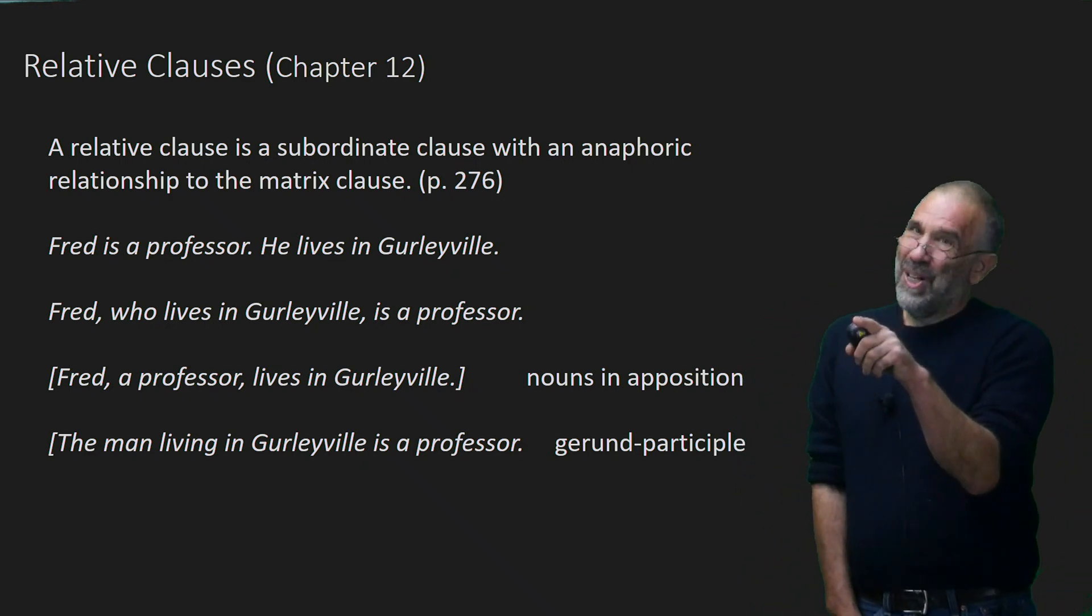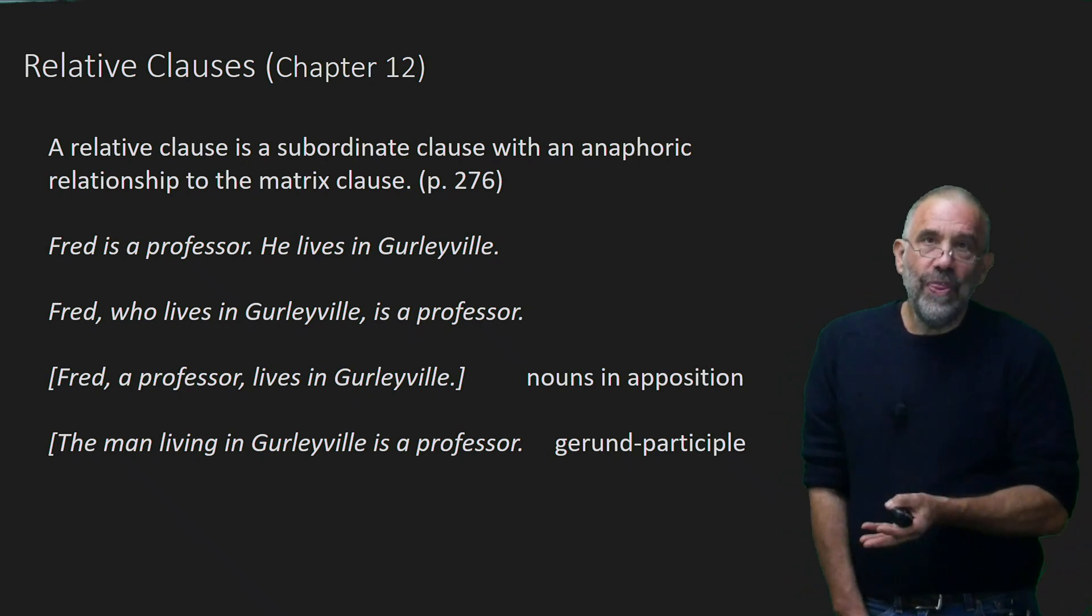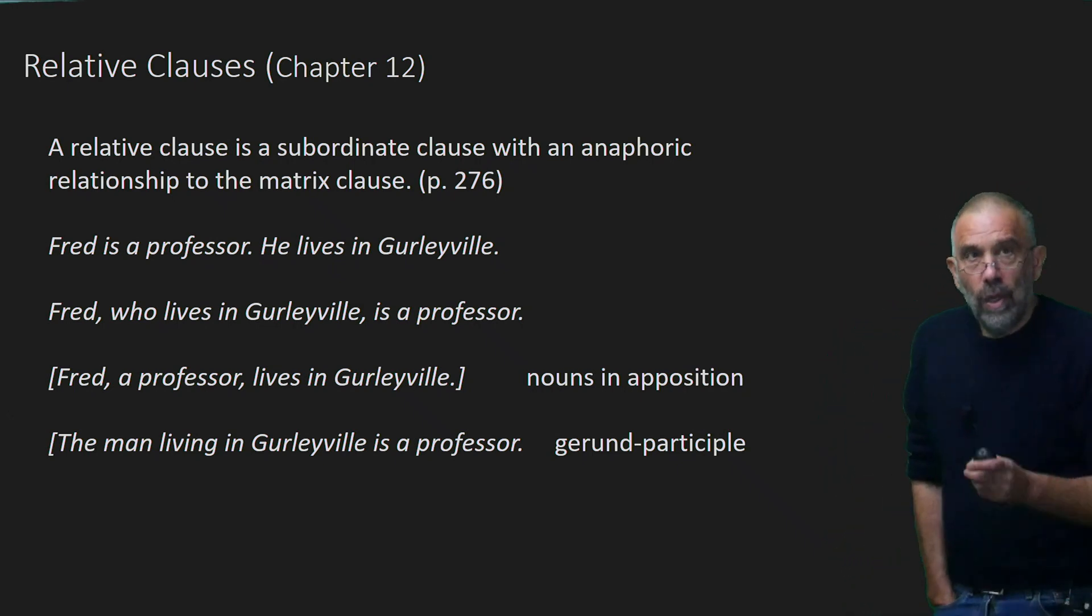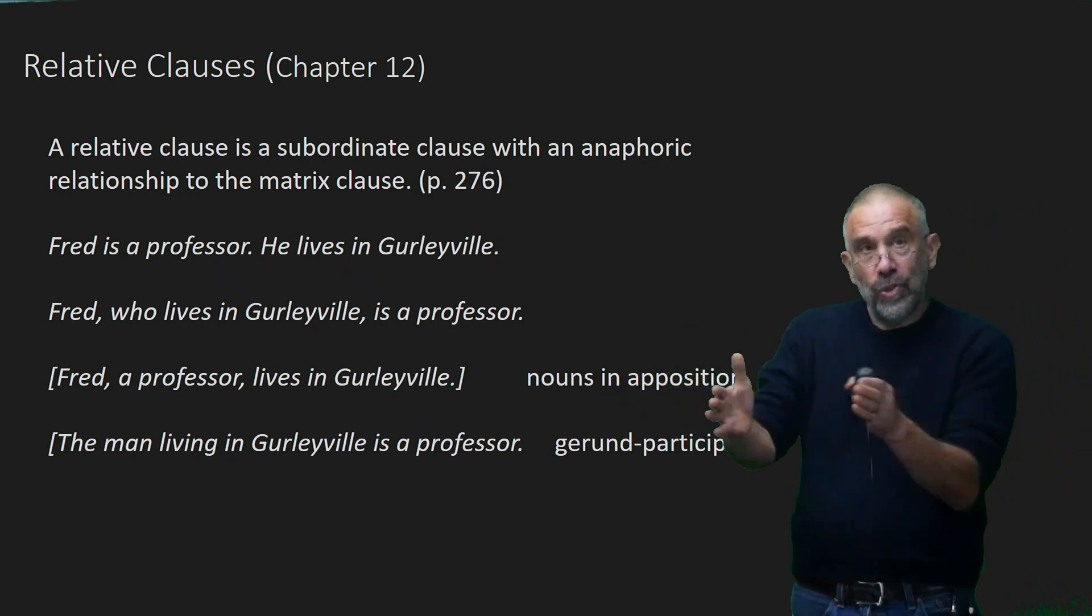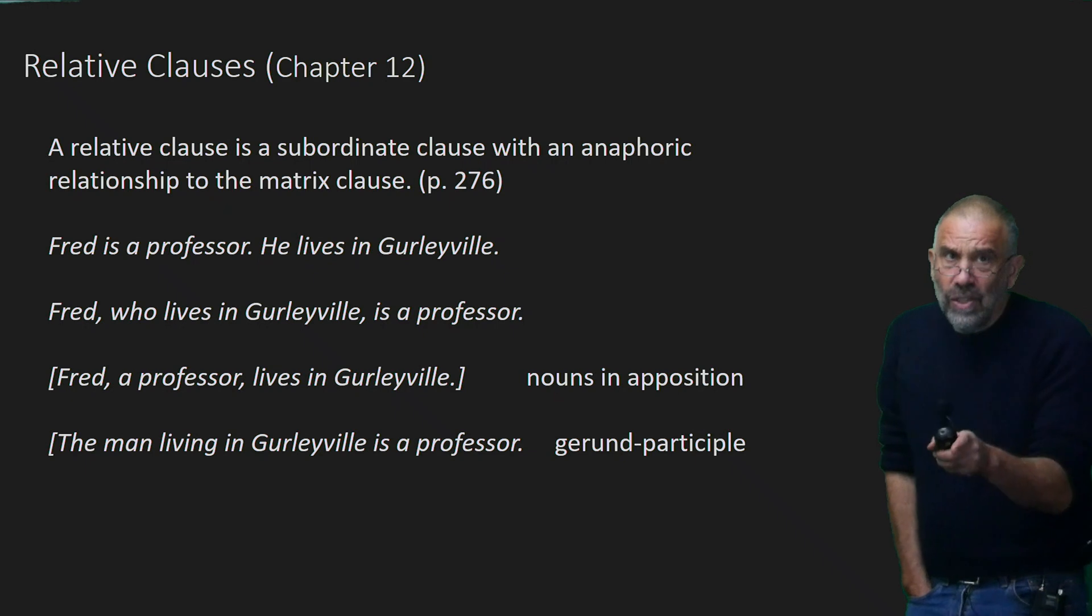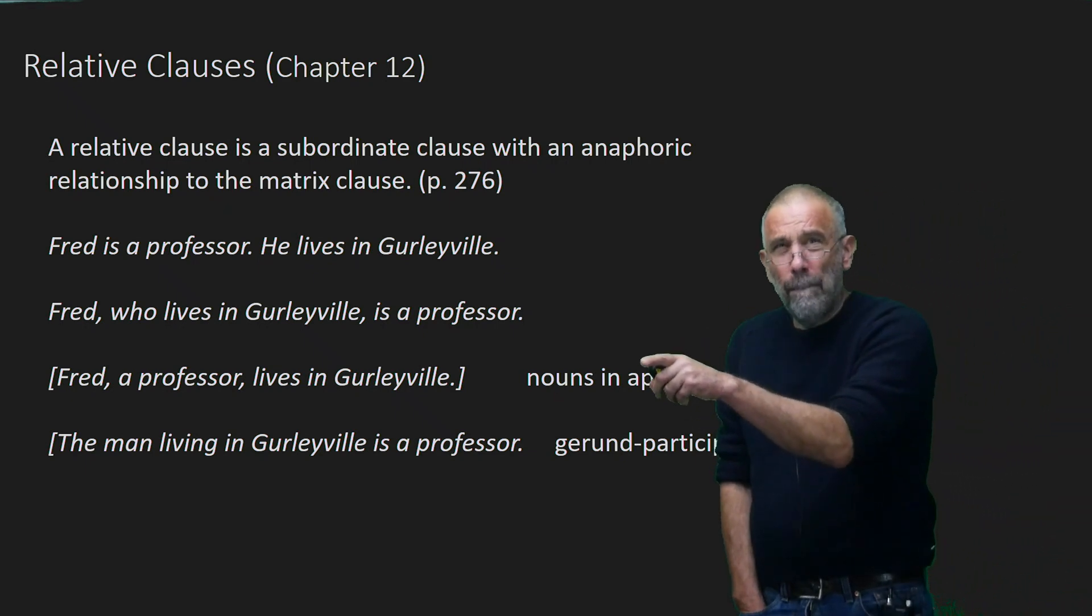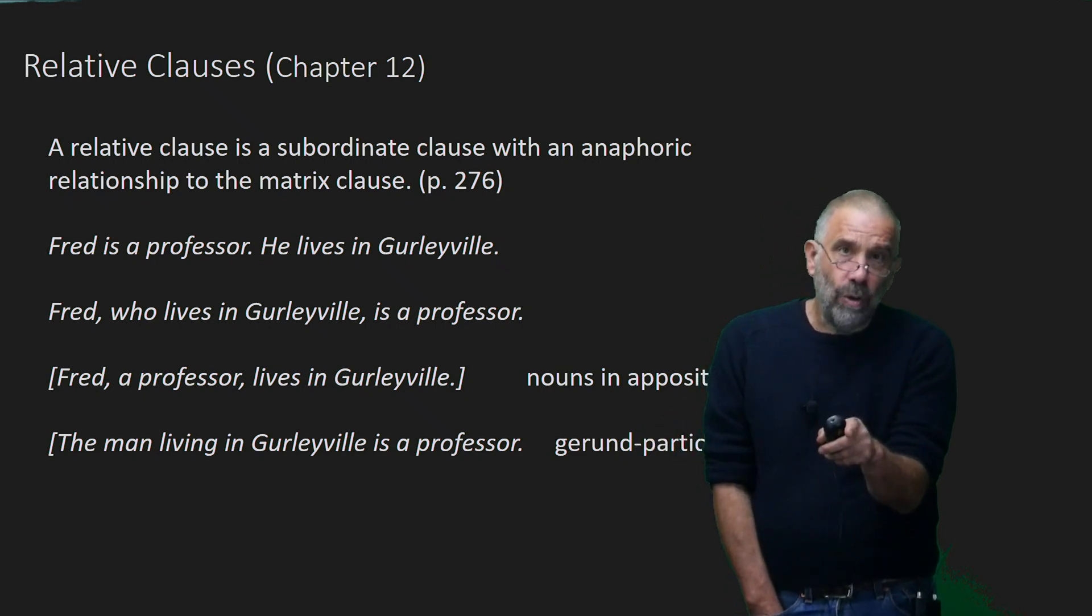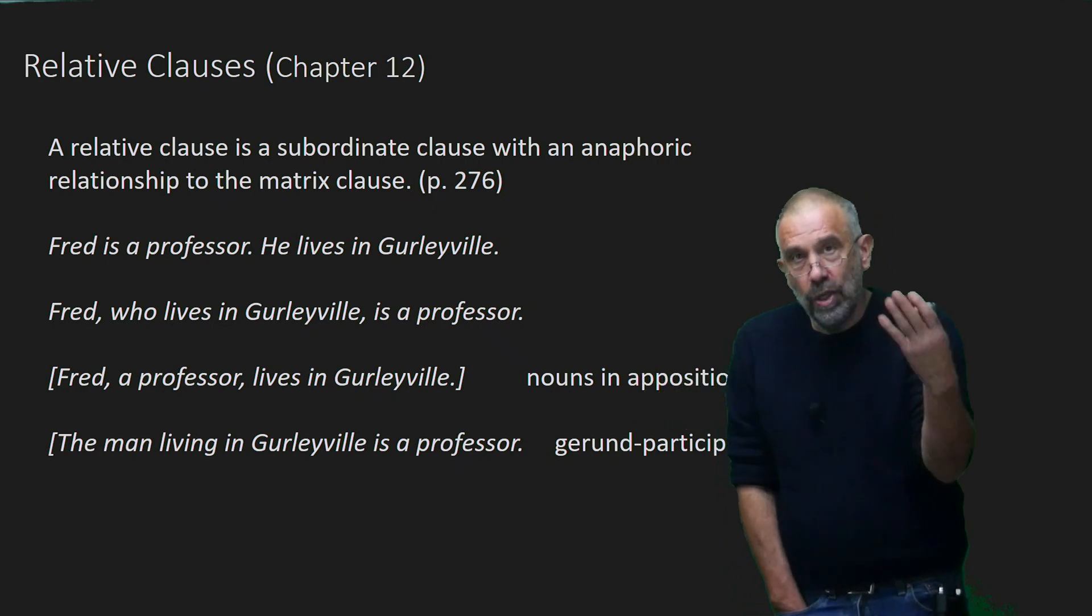A relative clause is a subordinate clause with an anaphoric relationship to the matrix clause. So the matrix clause being the whole clause in which you have a subordinate clause. And it has an anaphoric, in other words, it refers back to something in the same way that pronouns refer back to nouns, common nouns, proper nouns that you've already introduced.